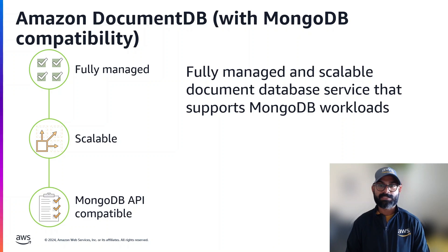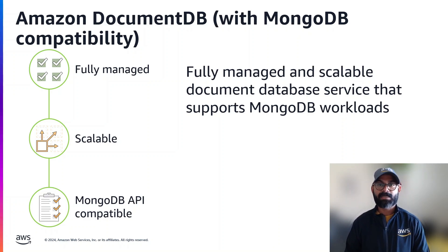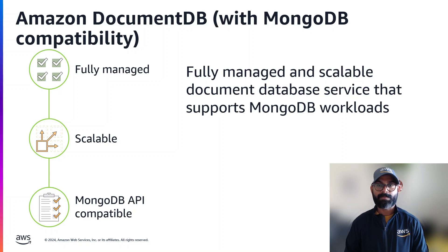Let's briefly talk about Amazon DocumentDB before we go deep into this use case. Amazon DocumentDB is a fully managed, highly scalable, and MongoDB API compatible JSON data store. Unlike traditional on-prem software, you do not need to maintain the servers or the software itself — Amazon Web Services does it for you. We are also highly scalable because of our architecture, and we are MongoDB API compatible, which means you can use your existing knowledge of MongoDB drivers and tools to build applications for Amazon DocumentDB.